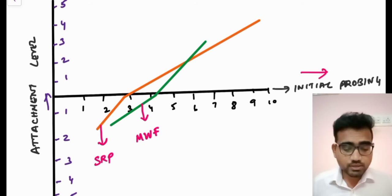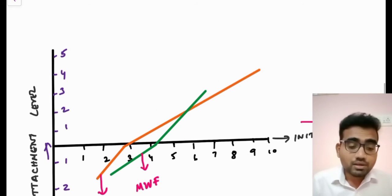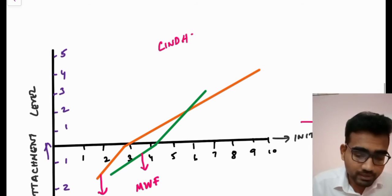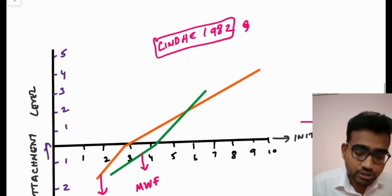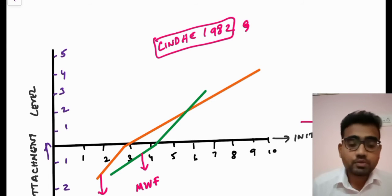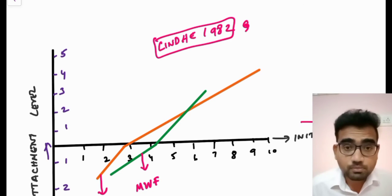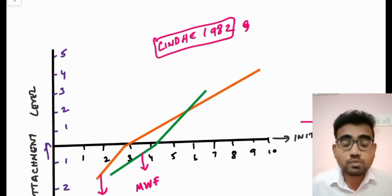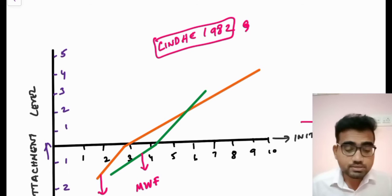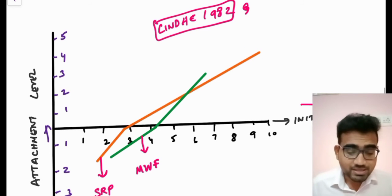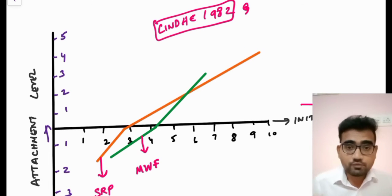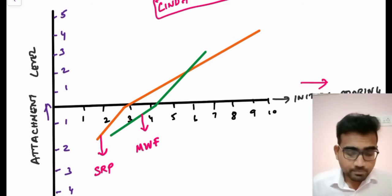This critical probing depth was given by Linde in the year 1982 — which can be a potential MCQ. During those times, the modified Widman flap was practiced more often, which is why they considered the modified Widman flap as the most common flap surgery.